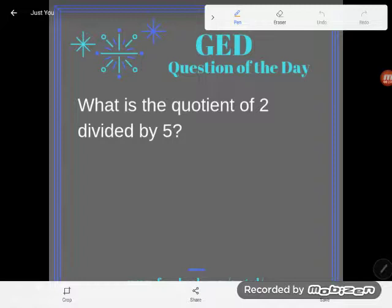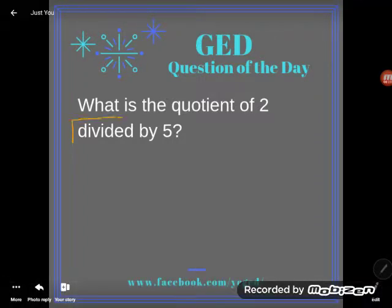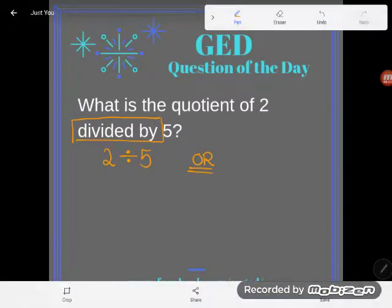But I want you to be really careful. A lot of students do this problem wrong because they switch the order. Order matters in division. A divided by symbol is this symbol right here. So we could write this as 2 divided by 5, or similarly you can also use a fraction bar to mean divided by.